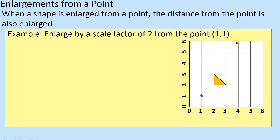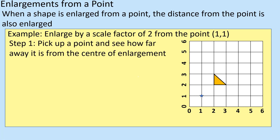So: enlarge by a scale factor of two from the point (1, 1). I've got a point here and a shape. This shape is going to be twice as big, but it's also going to be twice the distance from here. I know how big the shape is going to be — it's going to be two up and two along with a diagonal. But it also needs to be twice the distance from the centre point. The best approach is to choose each point and move them one by one.